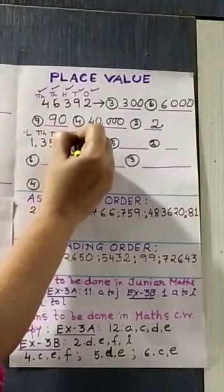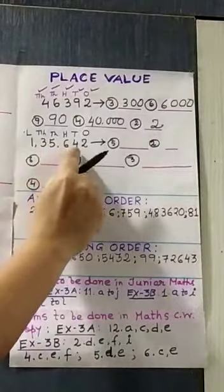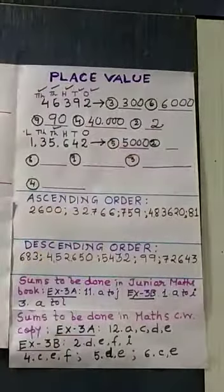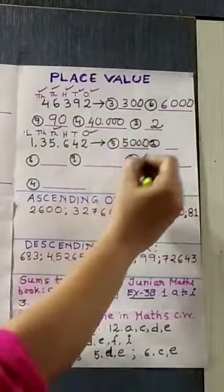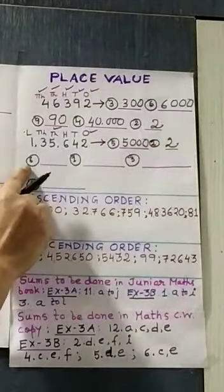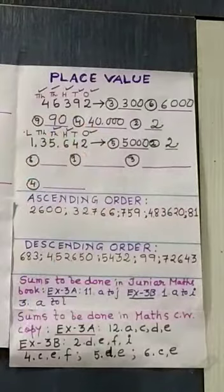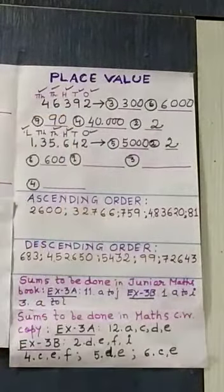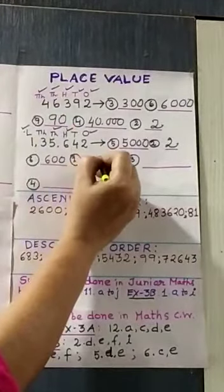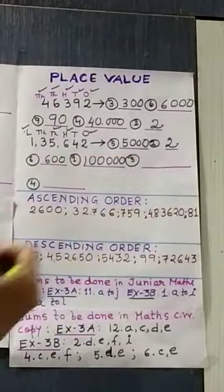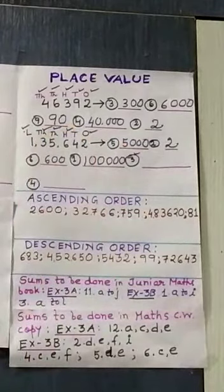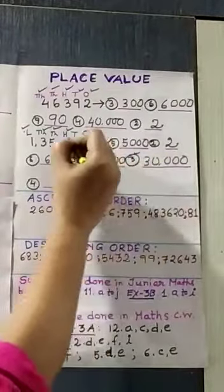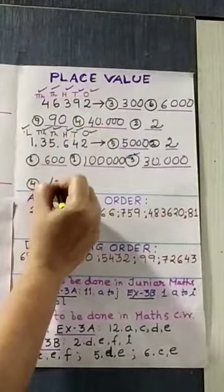The place value positions are: ten-thousands, thousands, hundreds, tens, and ones. The second number is 35,642. The place value of 5 is thousands, so we write 5,000. The place value of 2 is ones, so it is 2. The place value of 6 is hundreds, so we write 600. The place value of 1 is hundred-thousands, so we write 1,00,000. The last digit 3 is in the ten-thousands place, so it is 30,000. And 4 is in the tens place, so it becomes 40.